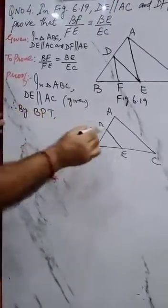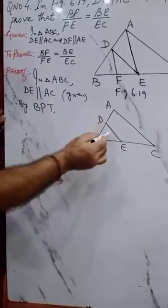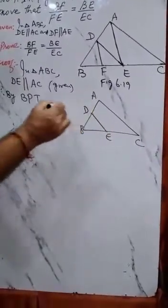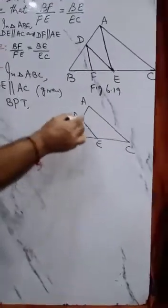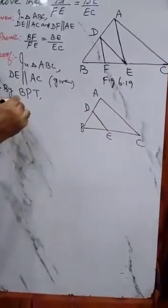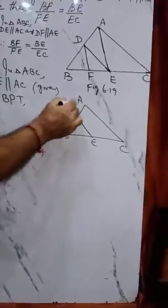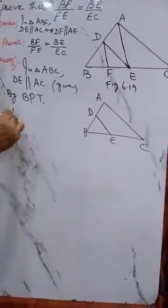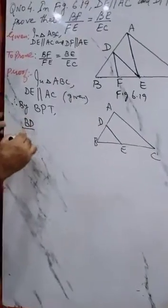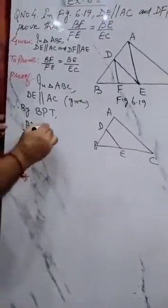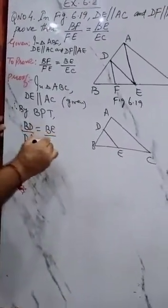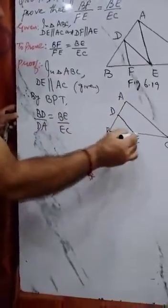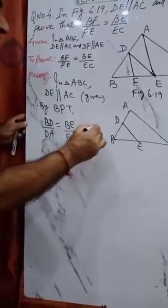What does that mean? We can write it as BD upon DA is equal to BE upon EC. This is equation number 1.